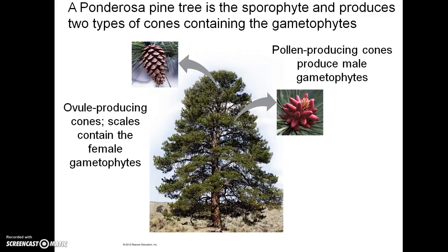A ponderosa pine tree is the sporophyte and produces two types of cones containing the gametophytes. So unlike the bryophytes, which have a gametophyte as the dominant life form, trees themselves are the sporophytes. Their cones — the pinecone here — contain the gametophytes. The cones you are familiar with as pine cones are the ovule-producing cones, whose scales produce the female gametophytes. These smaller cones are the pollen-producing cones that produce the male gametophytes.